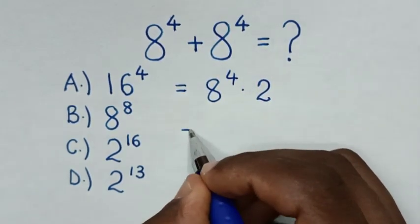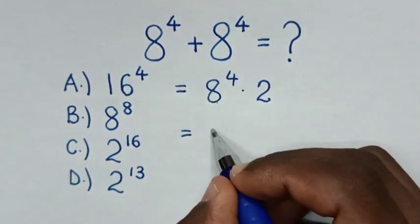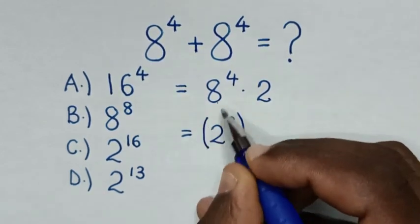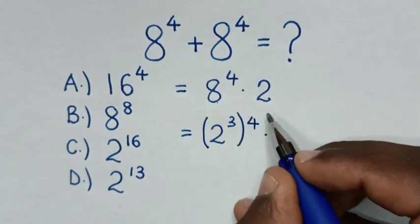Then, it will be equal to... 8 is same as 2^3, then bracket power 4, then times 2.